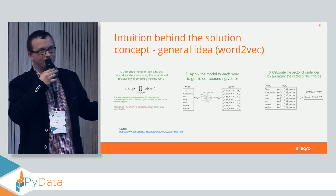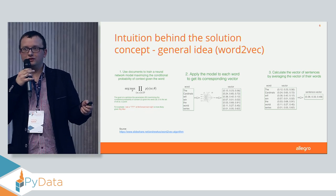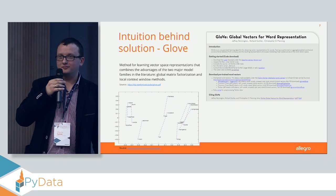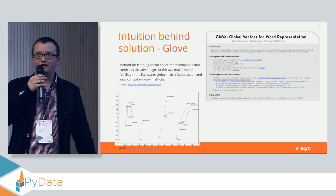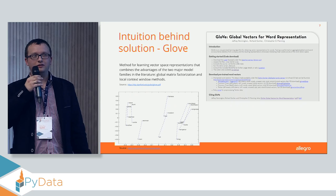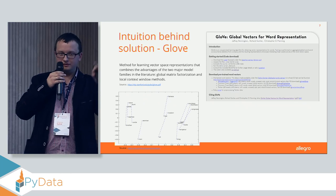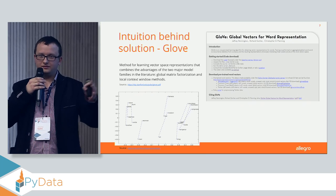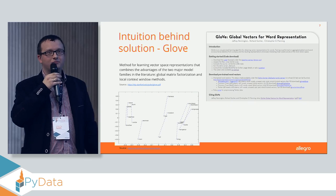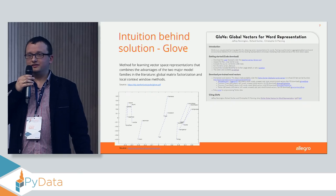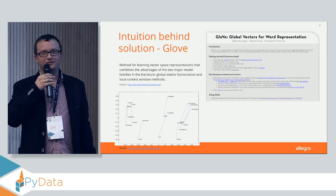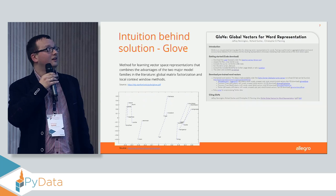We didn't use Word2vec — it's very nice, but sometimes it takes too long to train. What we use is the GloVe algorithm, developed at Stanford University. The difference between Word2vec and GloVe is that GloVe first calculates a co-occurrence matrix, and then runs the model on it. It's much better for large corpuses because with Word2vec you train the model every time it finds a repeated phrase, while GloVe trains only once on each pair.